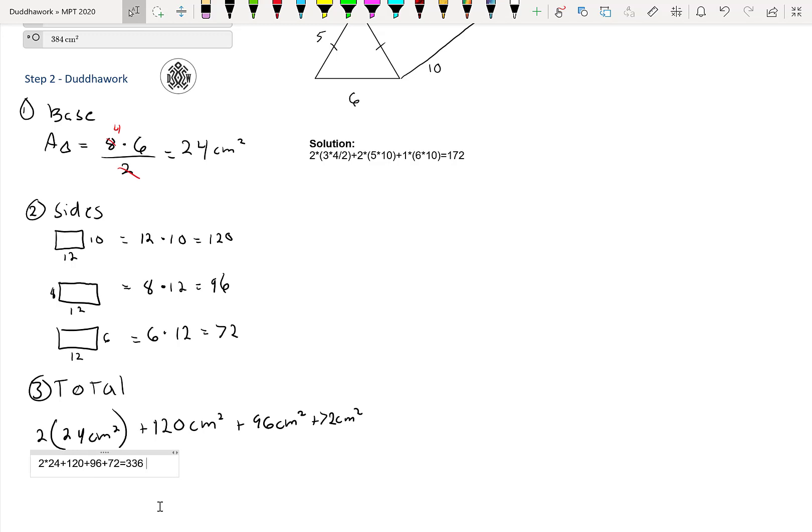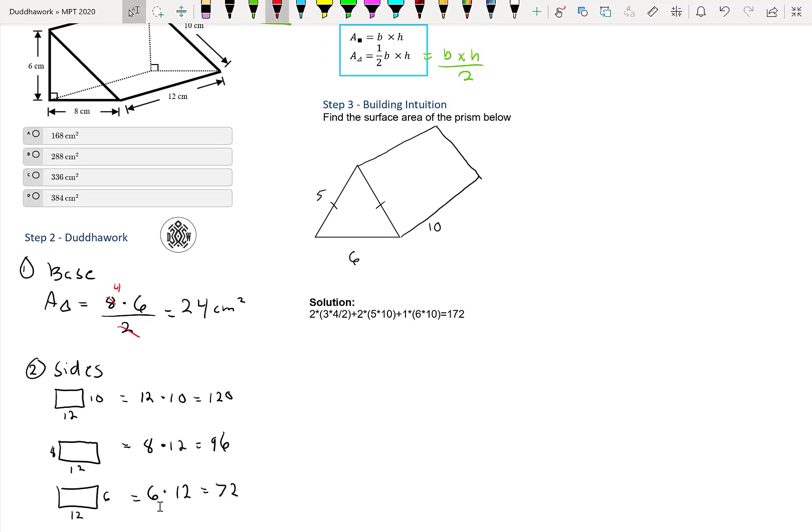we get 2 times 24 plus 120 plus 96 plus 72. And then equals 336. And this would be in centimeters squared. We go look at our answers, and it is this one indeed.